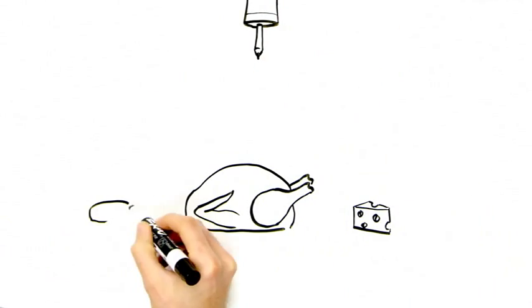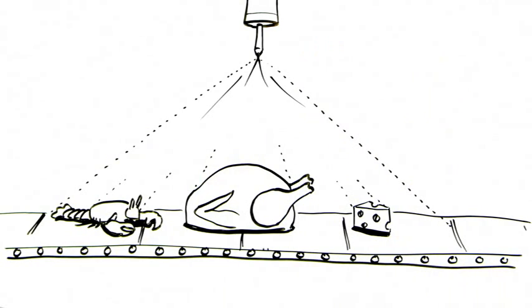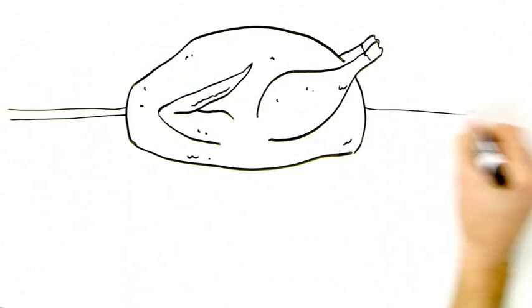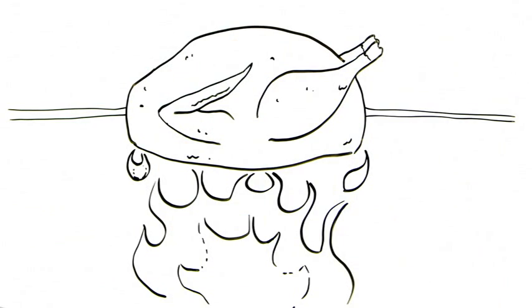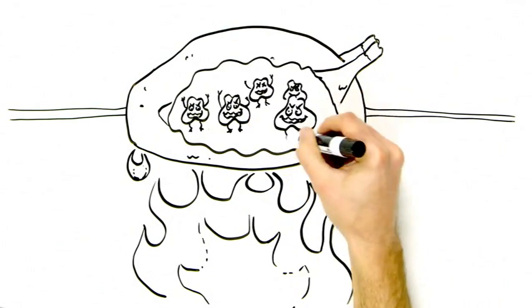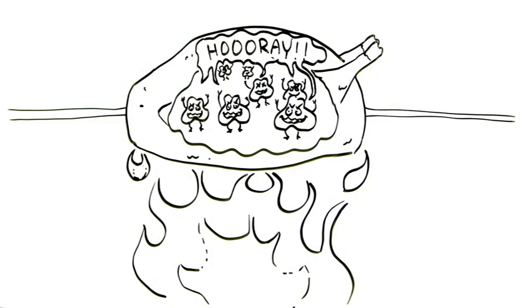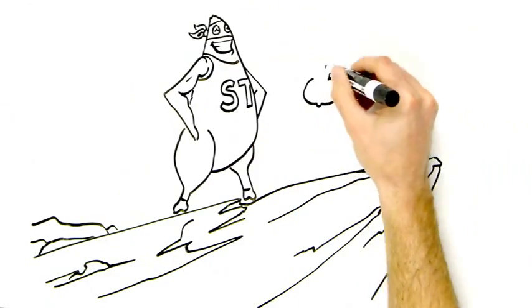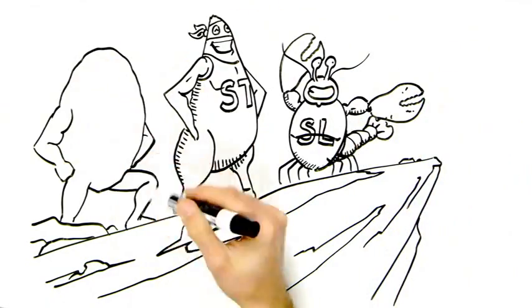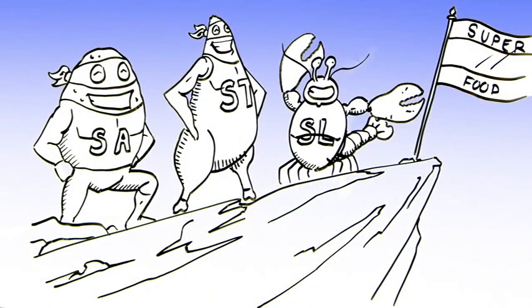While chemical processing treats primarily the outside of the item and heating tends to overheat the outside in order to reach the desired internal temperature, Hyperbaric HPP is applied uniformly throughout the product with the product already in the package.